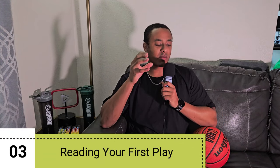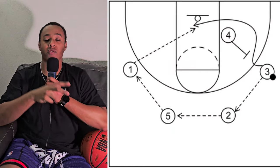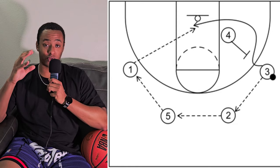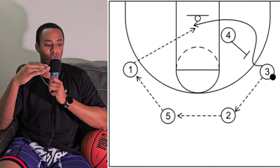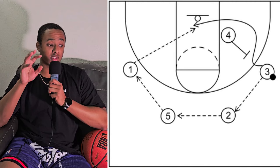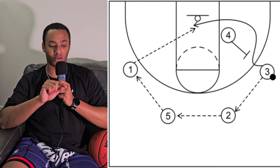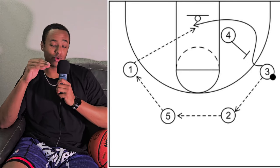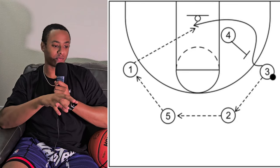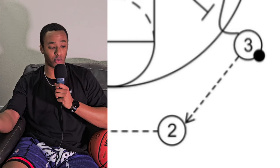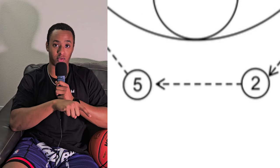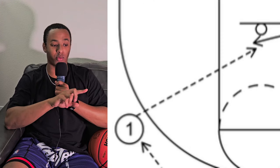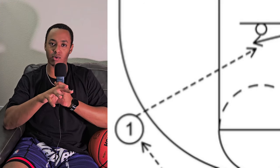Now let's take a look at this play on screen and go through it step by step. We can see the three-point line, the key, the free throw line, the basket, and all the positions. The primary ball handler is the three — our small forward — who passes it to the two, our shooting guard. The two passes it to the five, our center, who is outside the perimeter. The five then passes it to the one, our point guard, who throws a pass that looks like it's going to nobody.